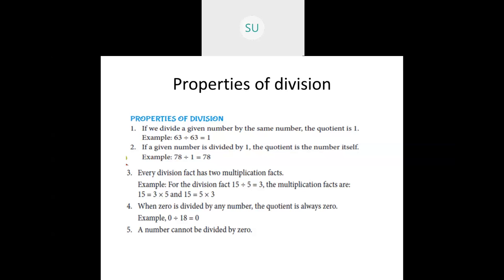Fourth property: when 0 is divided by any number, the quotient is always 0. For example, 0 divided by 18 is 0. However, a number cannot be divided by 0 — the divisor cannot be 0, as the result would be undefined.